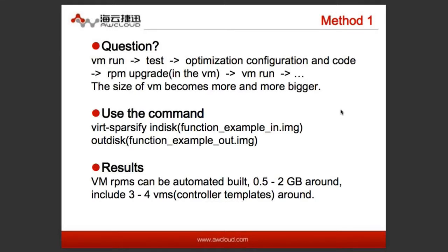Method One, first question: when the virtual machine runs, we should test and optimize configuration and code. And the RPM of the open-source components should be upgraded. So the size of the VM becomes bigger and bigger. We can use the command to specify in-disk and out-disk and review the results. Virtual machine RPMs can be automated built — around 522 GB, including around 324 virtual machines. These machines are all controller templates.